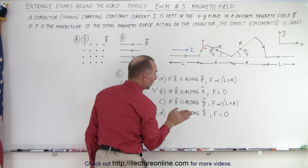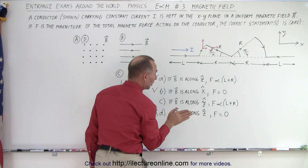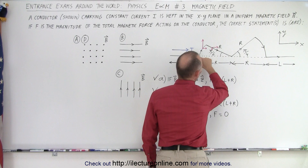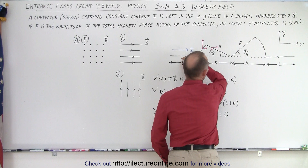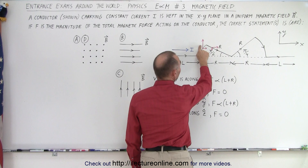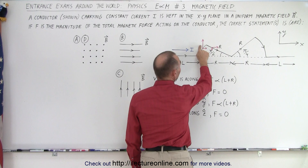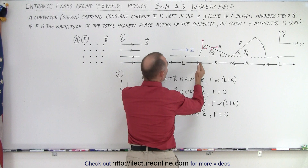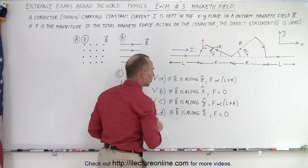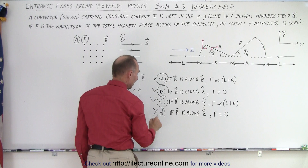If B is along the Y-axis — we have a current going horizontally and the magnetic field going up. As the current travels in the horizontal direction, the force is out of the board along all horizontal segments. For the up-and-down component of the arc, the direction of the current is the same as the direction of the magnetic field, so there's no force. The up and down contributions cancel, so the force is proportional only to the total horizontal length. This means statement C is also correct. So A, B, and C are all correct answers, and D is the wrong answer.